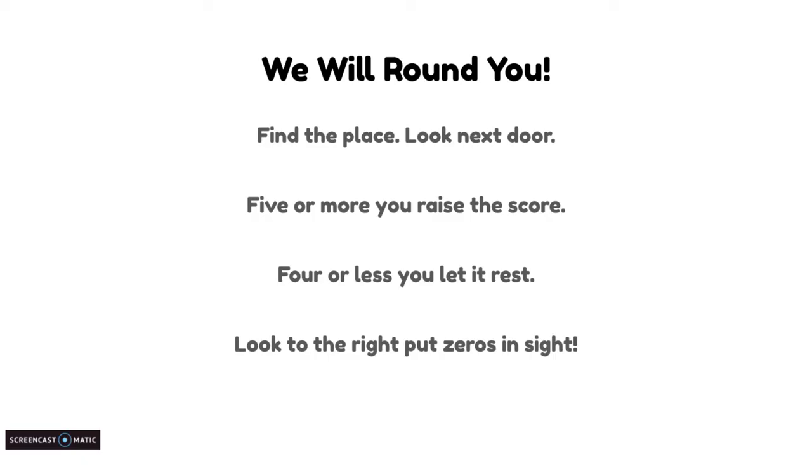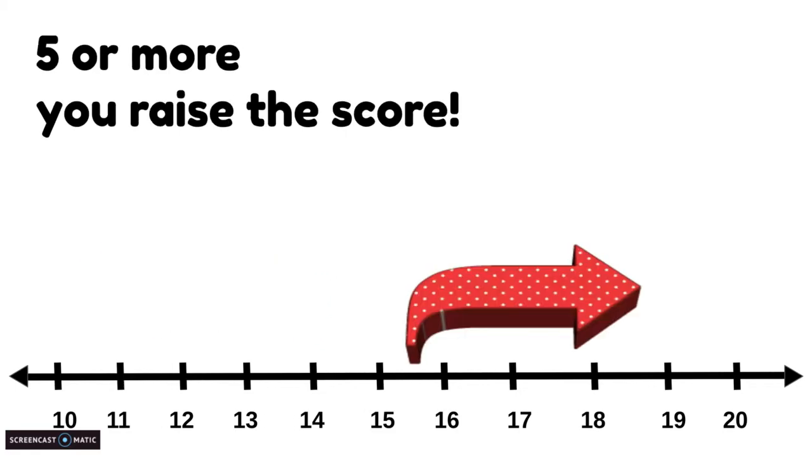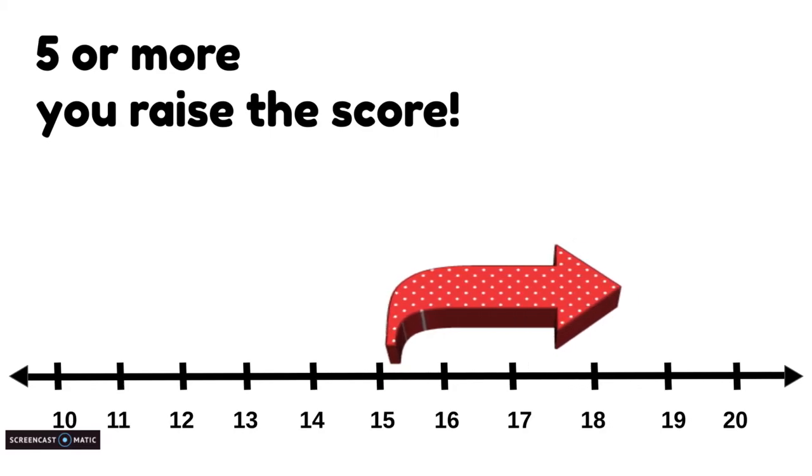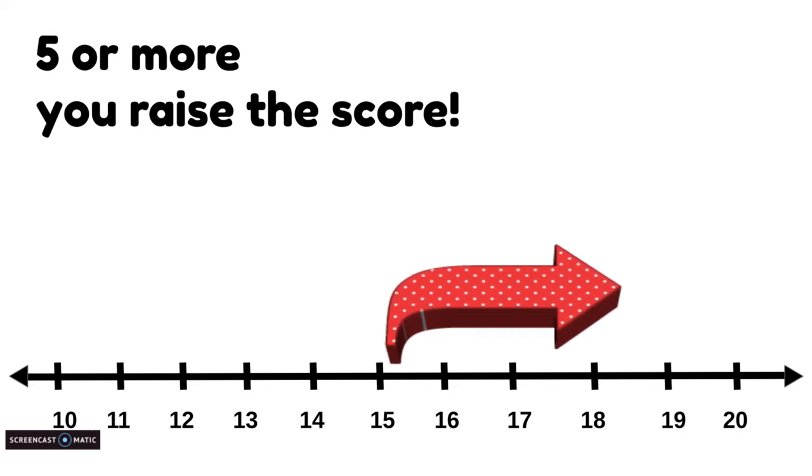We will, we will round you. So what it's telling you is anything that ends with a 4, a 3, a 2, or a 1, you're rounding it down to the lower number. Anything five or more, you raise the score. So anything that ends with a 5, a 6, a 7, 8, or 9, you round it up to the larger number. Let's keep practicing.